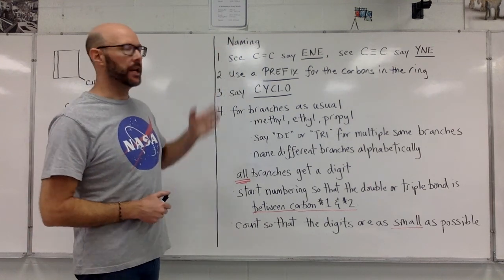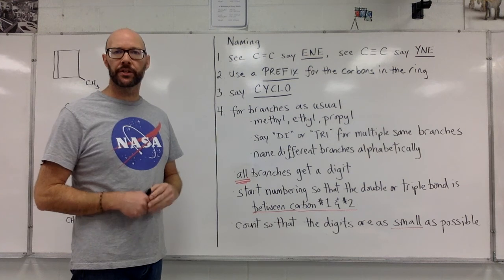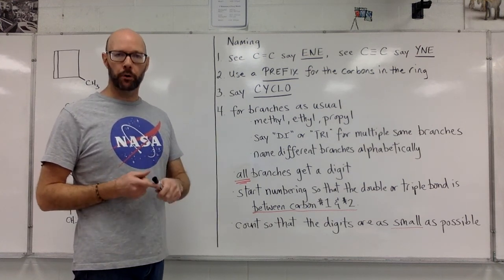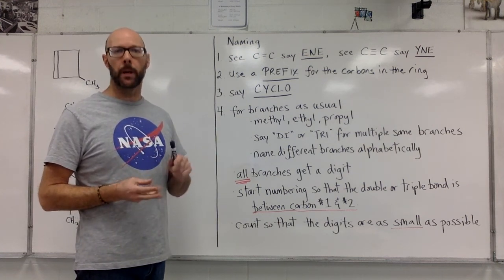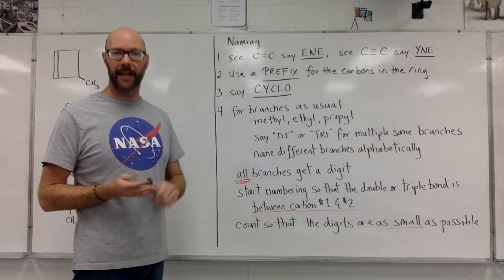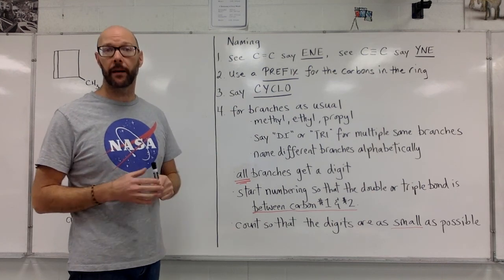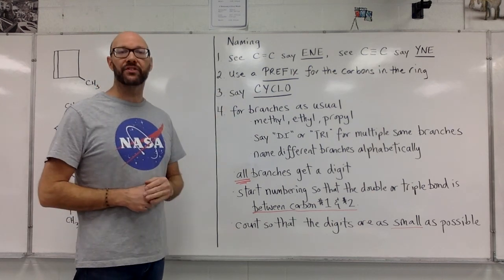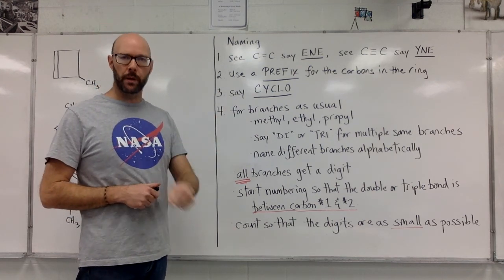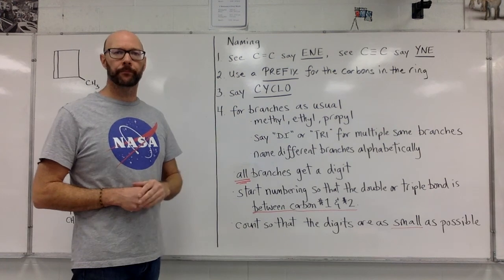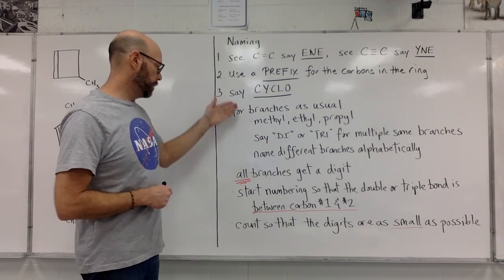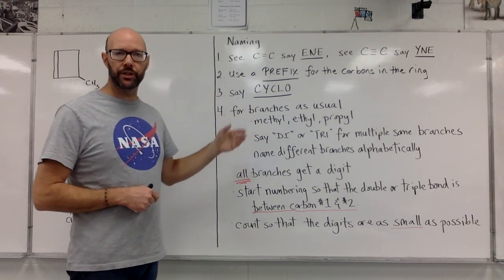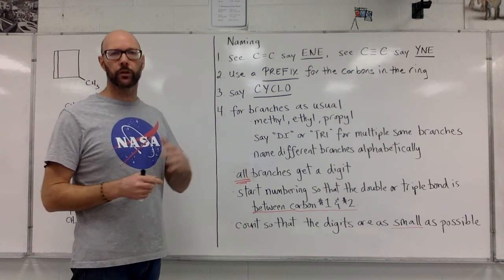We're going to use a number prefix to indicate the number of carbons in the ring — prop, but, pent, hex, hep, like that. These names are always going to have 'cyclo' because we make a ring structure. Traditional rules for naming branches apply: alphabetical order, di/tri for multiples, and so on.